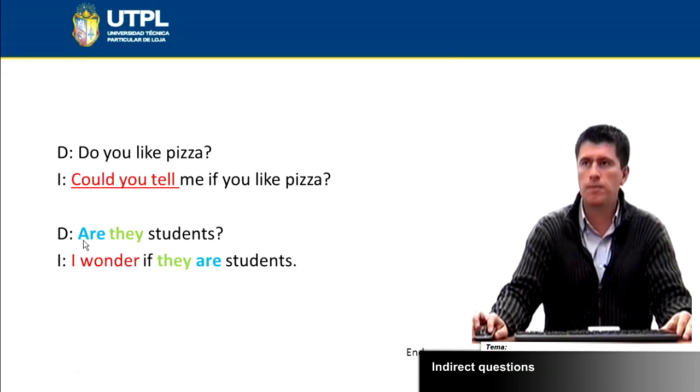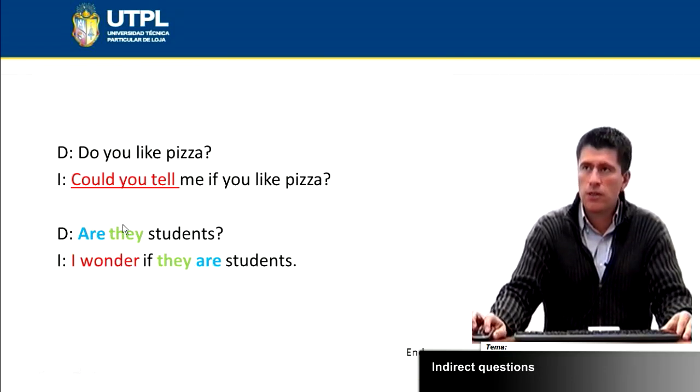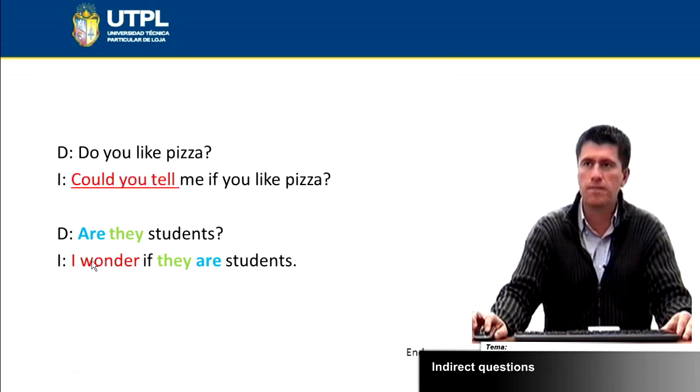Next example: Are they students? I wonder if they are students. Now this question is different than the first one. In the first one we're using the auxiliary and here we're just using the verb to be. So there is nothing to get rid of like we did in the first question. I wonder if they are students.